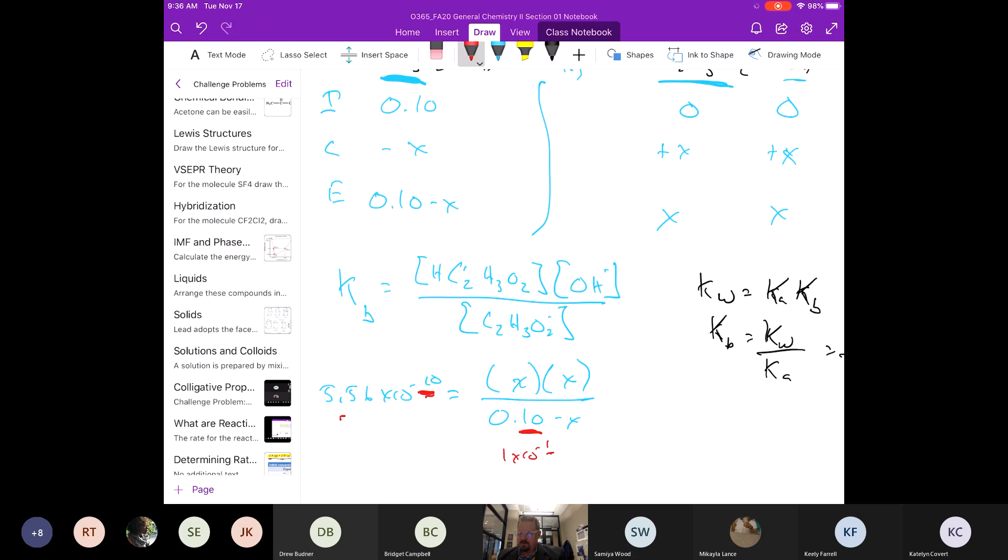Which means the majority of this is going to stay as the acetate. Very little of it is going to become the acetic acid, which means that X is going to be very small.